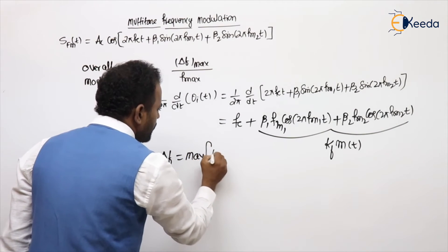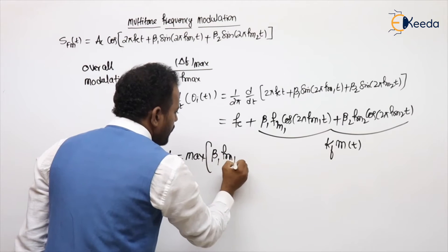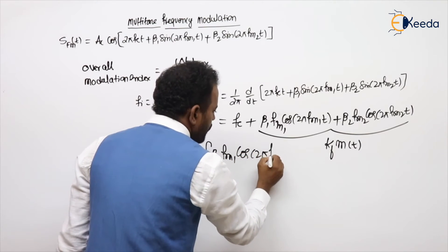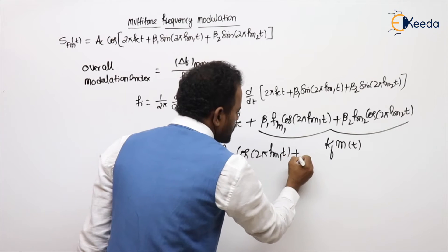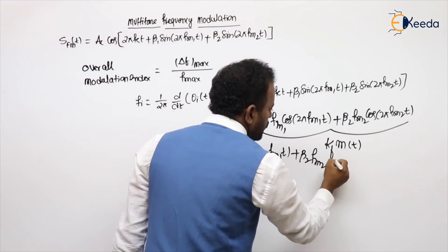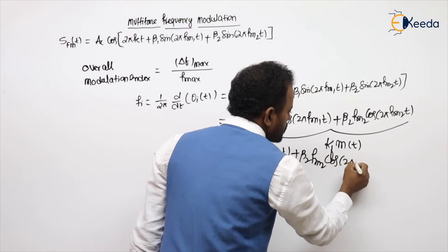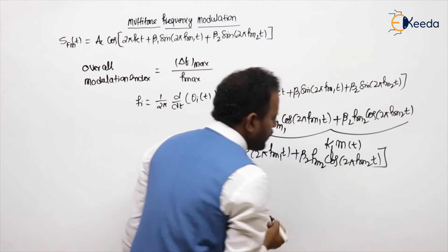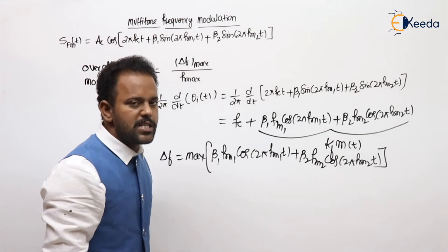Max value of β1 fm1 cos 2π fm1 t plus β2 fm2 cos 2π fm2 t. When we are discussing about envelope detection, I told that what is the max value of a cos plus b sin?